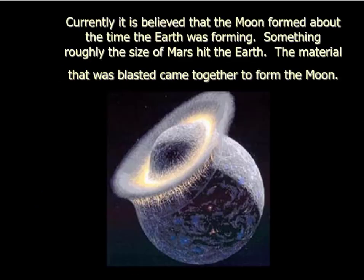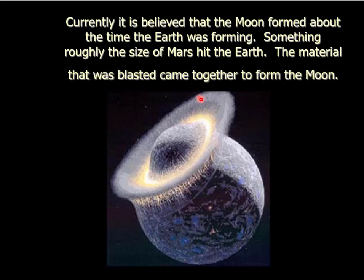Given that the Moon is about the same age as the Earth and chemically very similar, but lacks heavy metals, we ask: where did the Moon come from? We think it came from impact — something about the size of Mars hit the Earth about four and a half billion years ago. At that point the Earth was liquid rock, and the heavy elements had already sunk to the center. So all that got blasted off was rock, which came together to make our Moon.